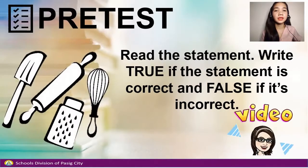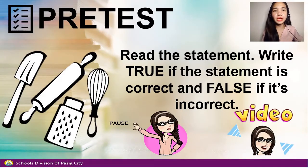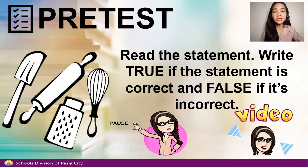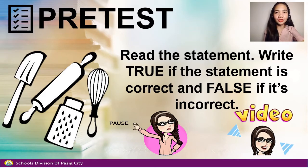For the second part of your pre-test, let's have true or false. Read the statement and write true if the statement is correct and false if it's incorrect. Pause the video when answering and play the video when you're done.